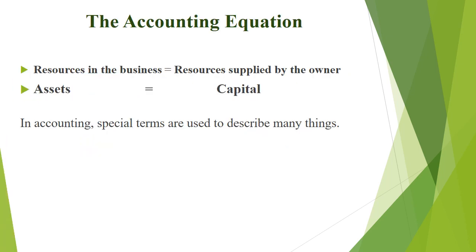The accounting equation is actually equalized to resources. The resources in the business equal to the resources supplied by the owner. The resources in the business are called Assets, and the resources which are supplied by the owner to the business is called Capital. On the left side are the resources in the business — Assets — and on the right side, what is supplied by the owner, that is called Capital.